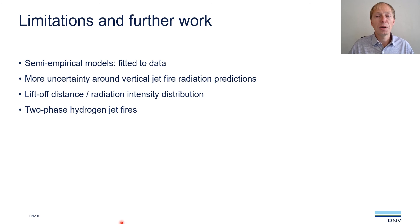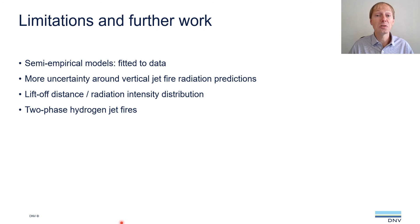Coming towards the end of the presentation, some limitations and further work: these semi-empirical models are fitted to experimental data, so there is always greater uncertainty when predictions are made outside the range of data used to develop the model. For vertical jet fires, we have seen quite a lot of scatter when comparing model predictions with experiments, which we would like to understand better. We are also investigating the importance of liftoff distance for low-luminosity jet fires and the radiation intensity distribution along the flame centerline. Additionally, we are interested in extending this work beyond vapor jet fires, particularly to two-phase hydrogen jet fires.